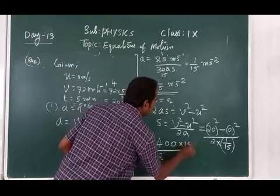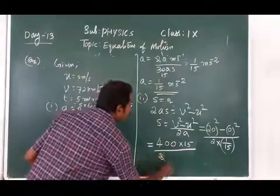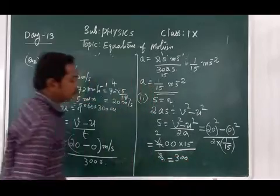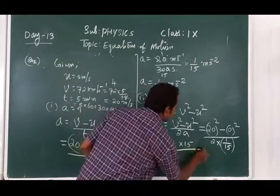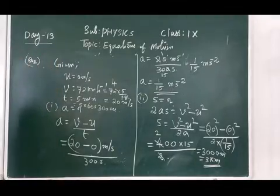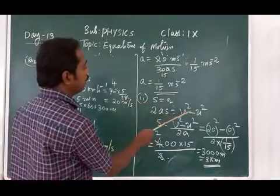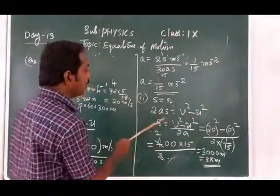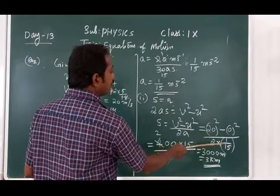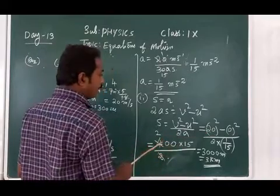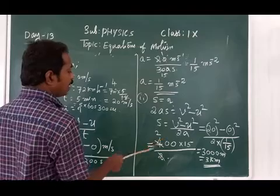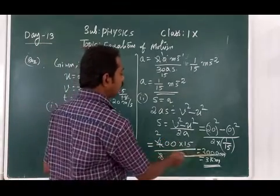20 squared is 400, 0 squared is 0. So we have 400 divided by 2 into 1/15. The 15 comes to the numerator. 400 into 15 divided by 2 gives 200 into 15 equals 3000 meters, or 3 kilometers. This is the distance traveled by the train.